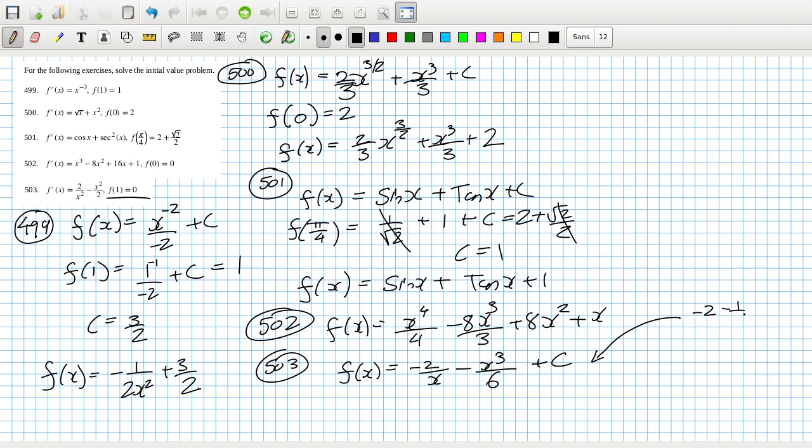Here f(1) has to be 0, so that means minus 2 over 1 minus 1 over 6 plus c has to equal 0. So c is 2 plus 1 over 6 which is 13 over 6. So we get the answer of minus 2 over x minus x cubed over 6 plus 13 over 6.